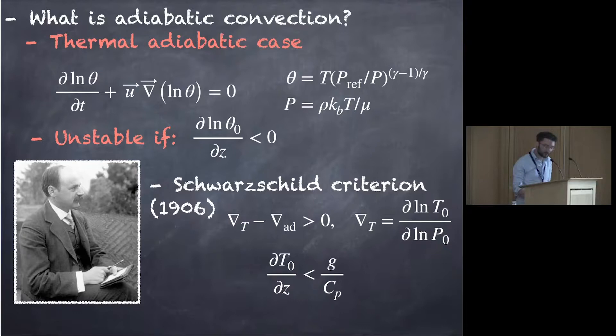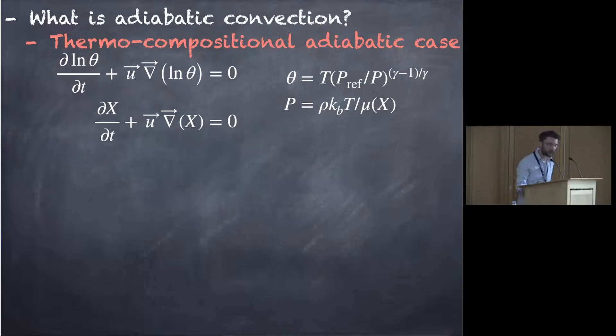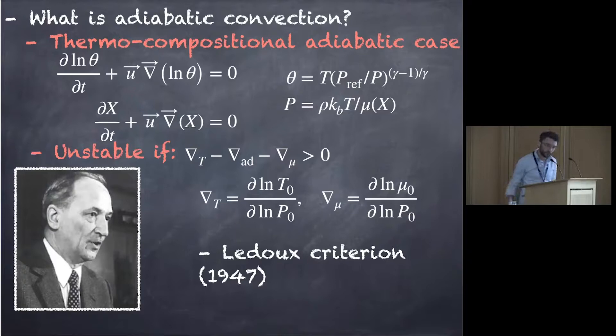If you go a bit further than that, as Jeremy also explained, you can put composition, transport of composition. If your mean molecular weight depends on composition, then you end up with the Ledoux criterion, here, with the impact of the mean molecular weight gradient. And if you have heavy stuff on top of light stuff in terms of molecular weight, it's gonna be unstable, as Jeremy pointed out.